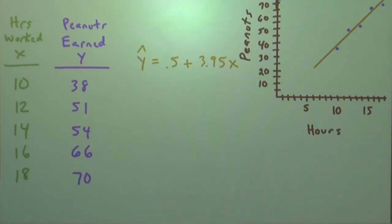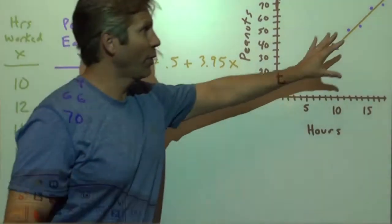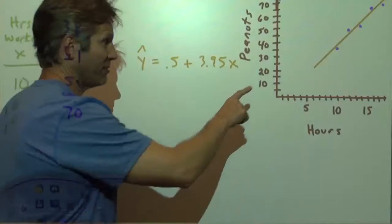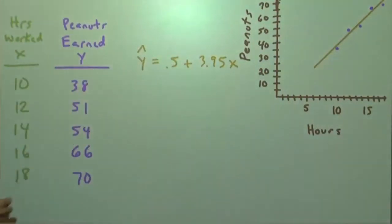Residuals, error amounts, residual analysis. We want to cover this. Remember, we had ordered pairs. We plotted those points on a graph, found the line of best fit, and there it is. That's a scatter plot.